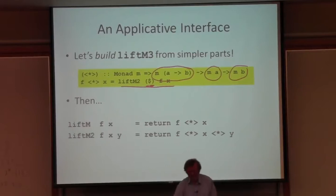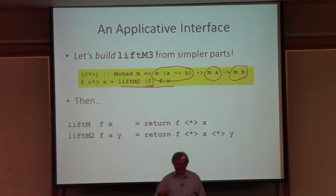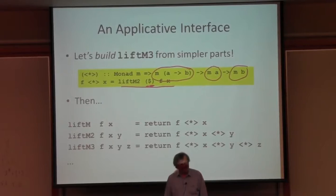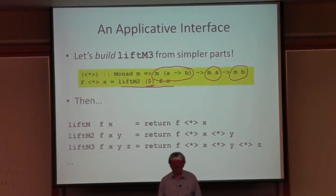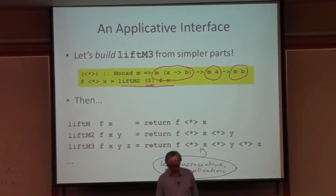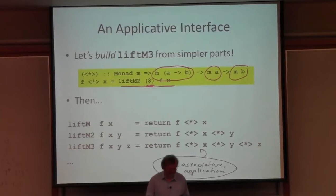If I define this operator, I'm going to be able to rewrite liftM f x as return f star x. For liftM2, I can take a binary function f, lift it to the monadic level with return, and use monadic application to apply it to each argument. liftM3 likewise. Now I only need to define this one star operator and all of those lift functions I can construct on the fly. This operator has to associate to the left, just as function application does.